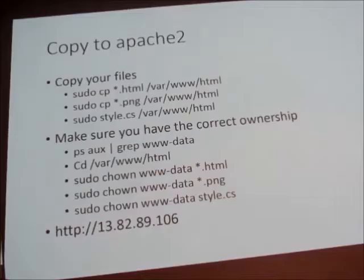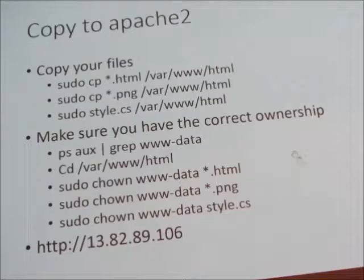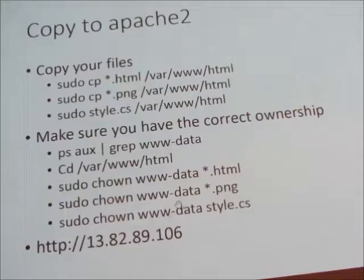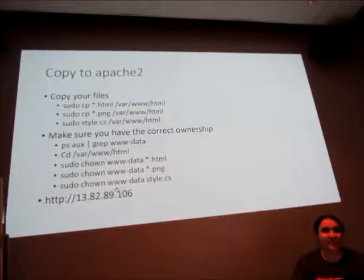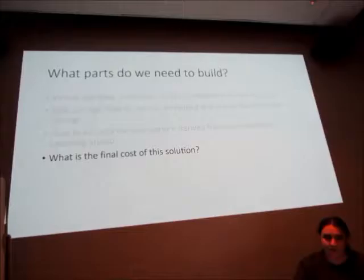Finally we still need some extra bookkeeping for our Apache 2 server. We need to make sure that we copy our HTML file over to the web root, put the PNG file and the style file in WWWHTML, and make sure all our files have the correct owner so that Apache can see it. Then we can go to this IP address, and I also mapped it to the title game — datainspectors.com.